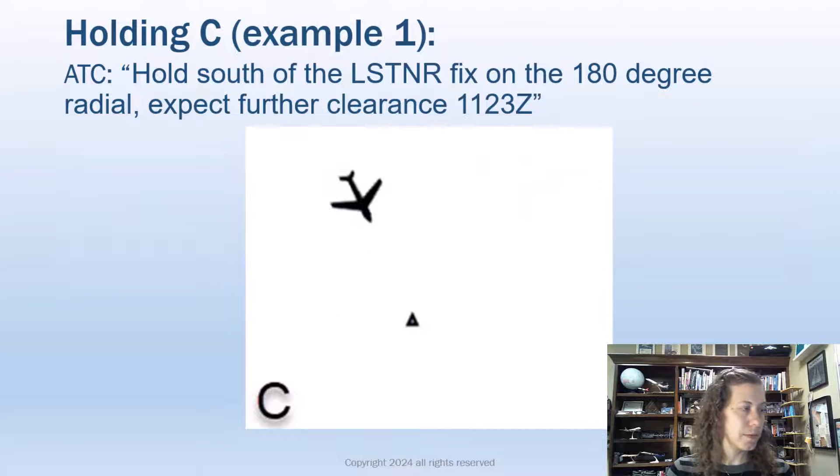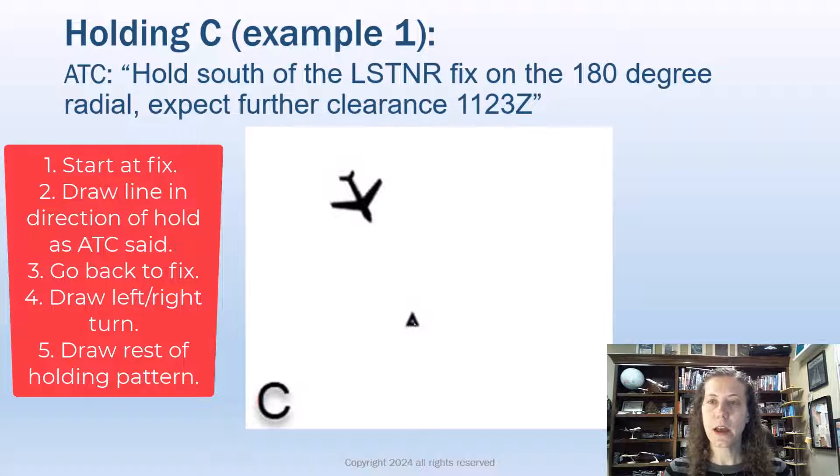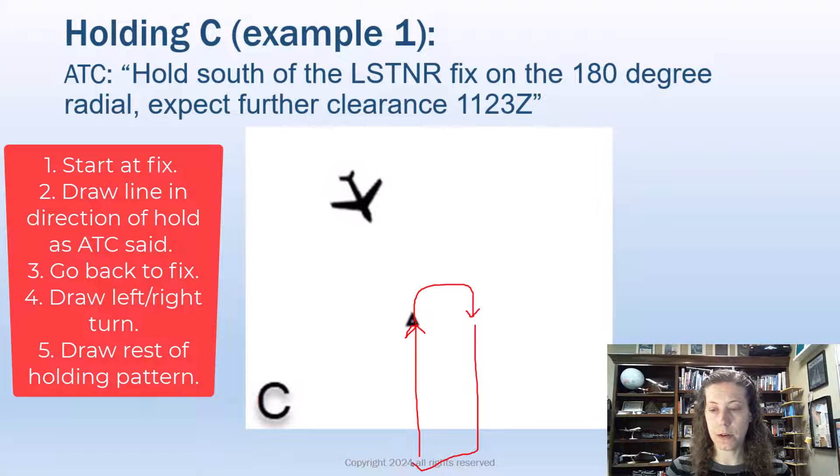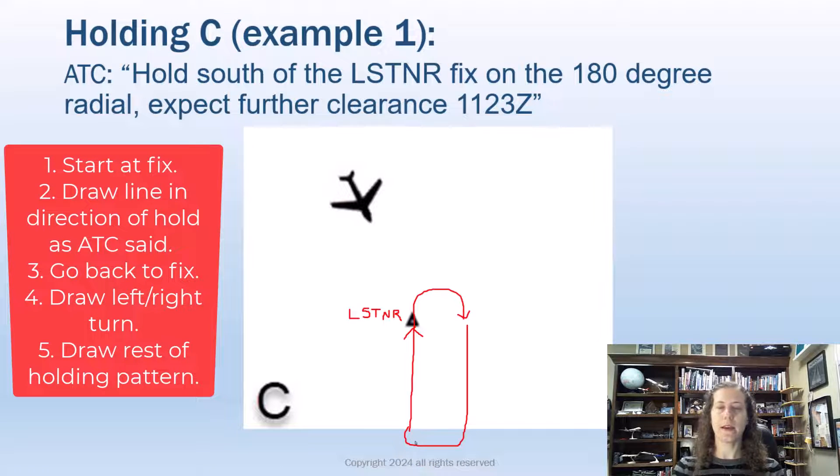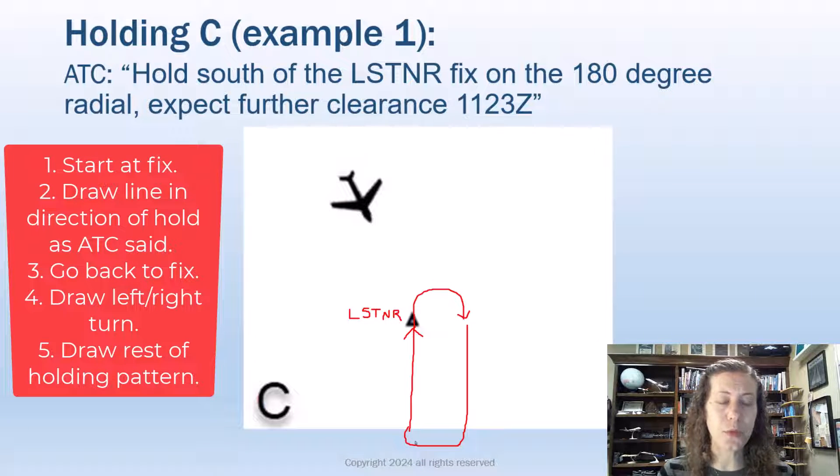Awesome. Let's try another one. So in this case, it says hold south of the listener fix on the 180-degree radial, expect further clearance at 1123Z. So we hold south, so we can draw that. It doesn't say anything about turns, so we're making a right turn. Practice with our drawing. Draw my holding pattern fix. A little square. So we get something like this.